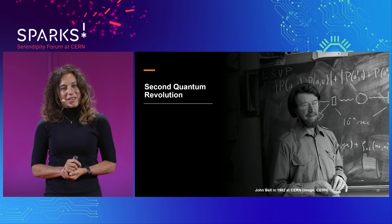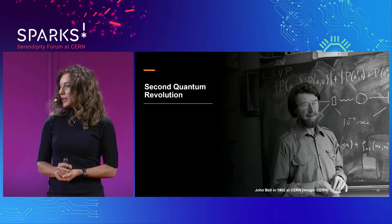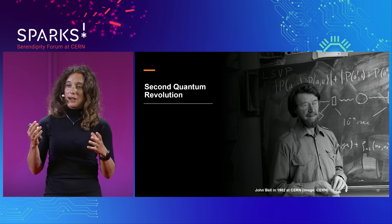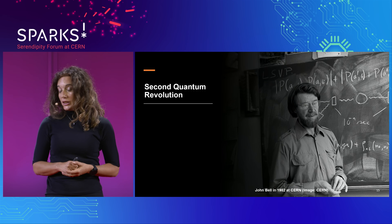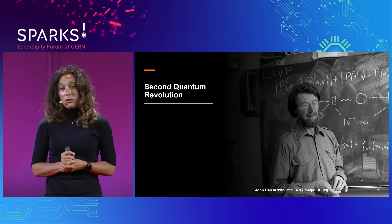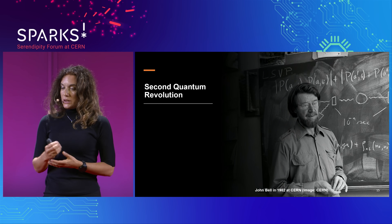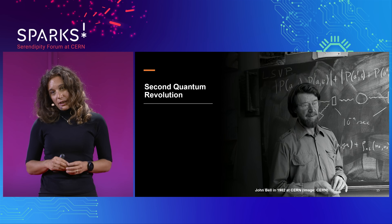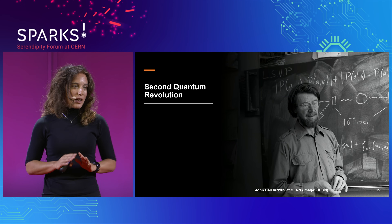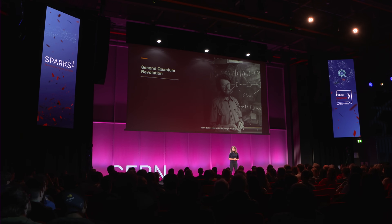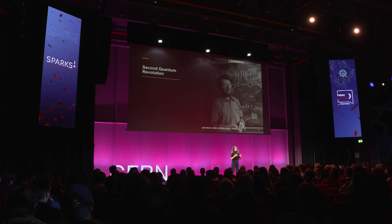CERN did participate in some way in bringing up this quantum revolution. We talk about it in the 2000s, but this actually started much earlier, when John Bell was working at CERN and he proposed a mathematical proof that showed that some of the phenomena that quantum mechanics can explain cannot be explained by any other theory — any other pre-existing classical theory. So he gave us a proof that we need quantum mechanics to explain some of the behaviors that we see around us, how fundamental particles work. That was a very, very important step.